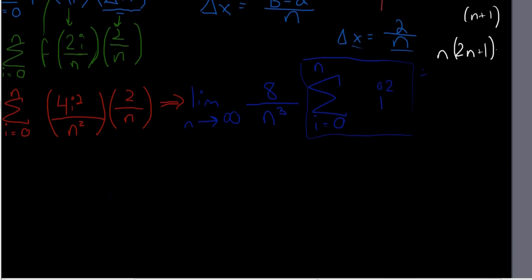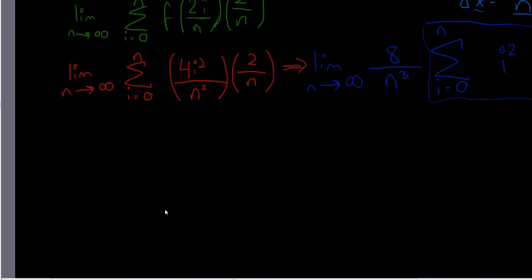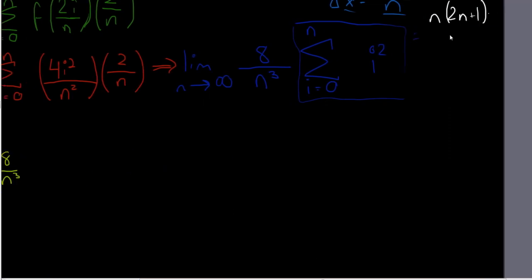So, now what we have is the limit as n goes to infinity, and now all that was replaced. So we have 8 over n cubed. That didn't do anything. And then we're able to replace this by multiplying all this. All this is over 6.